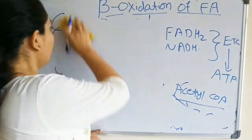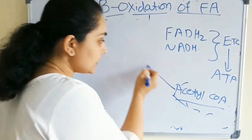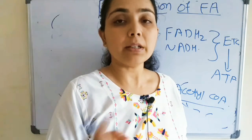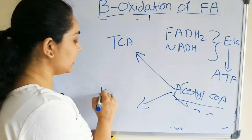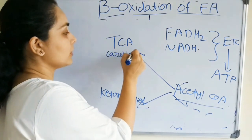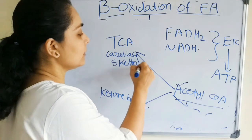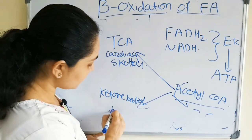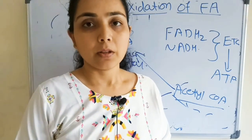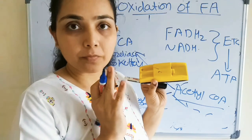Depending upon the tissue type where the process takes place: if it is in cardiac muscle or skeletal muscles, during exercise when there is a need for energy, the acetyl-CoA will enter the TCA cycle. But if it is in a hepatocyte — the liver cell — then the acetyl-CoA will help in the production of ketone bodies. This is the basic idea of beta oxidation of fatty acid.